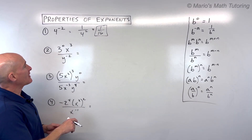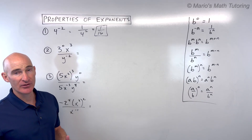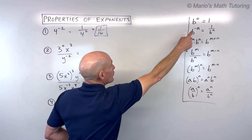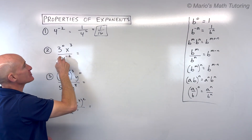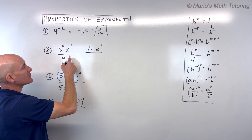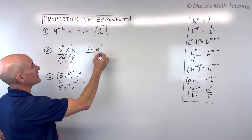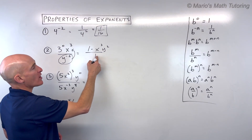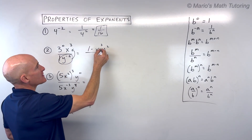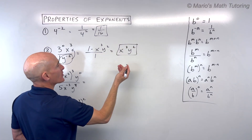For number 2, we've got 3 to the 0 times x to the 3rd, all divided by y to the negative 2. Anything to the 0 power is equal to 1, so 3 to the 0 is 1. x cubed is just x cubed. For y to the negative 2, that negative exponent tells us to take the reciprocal — move it to the other side of the fraction bar and make it positive, leaving just 1 in the denominator. This condenses down to x cubed times y squared.